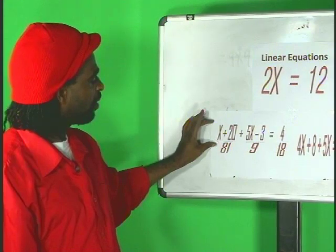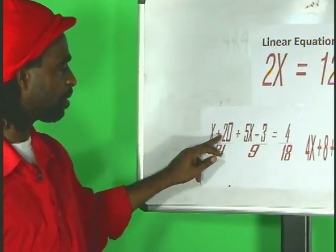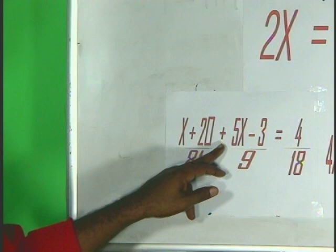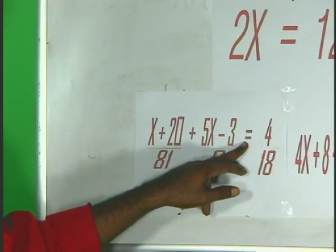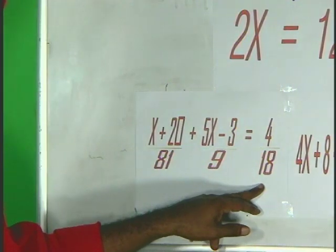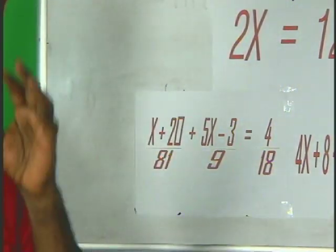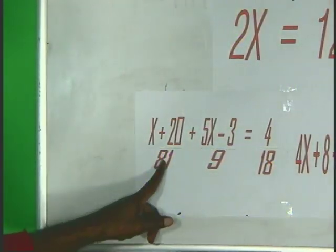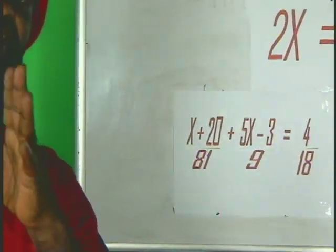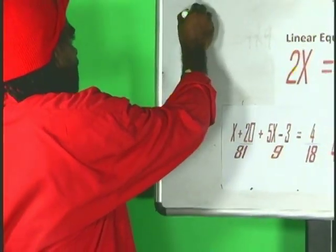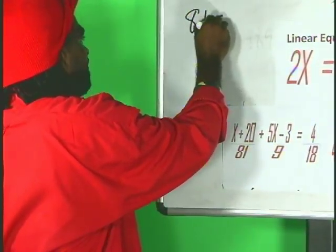Here we have x plus 20 over 81 plus 5x minus 3 over 9 is equal to 4 over 18. What we are going to do now is to get rid of the denominators. How do we do that? We do that by finding the LCM.